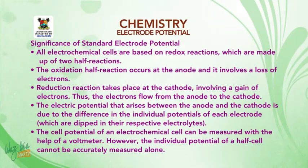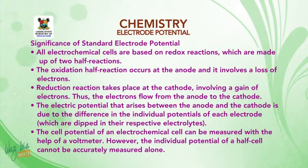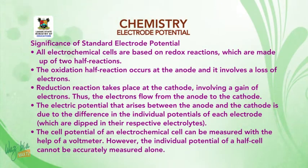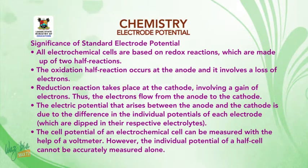The significance of standard electropotential: all electrochemical cells are based on redox reactions which are made up of two half reactions. The oxidation half reaction occurs at the anode and involves a loss of electrons. Reduction takes place at the cathode involving a gain of electrons. Thus, electrons flow from the anode to the cathode. The electric potential that arises between the anode and the cathode is due to the difference in the individual potential of each electrode dipped in their respective electrolyte.